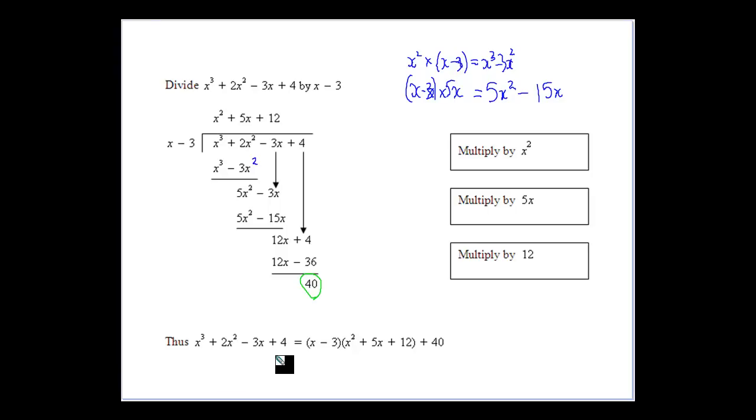So, thus we can write our dividend is equal to our divisor times our quotient plus our remainder. So then we get all that from our polynomial division as we go through and do that there. So there's our process of polynomial division.